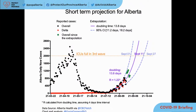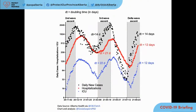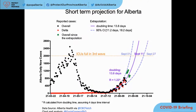I would like to talk about the spread dynamics of COVID in Alberta — this is a short-term projection. Daily new cases are growing exponentially. The doubling time is 14 days right now, and if we don't put any public health measures in place, we will reach 2,000 daily new cases around mid-September.